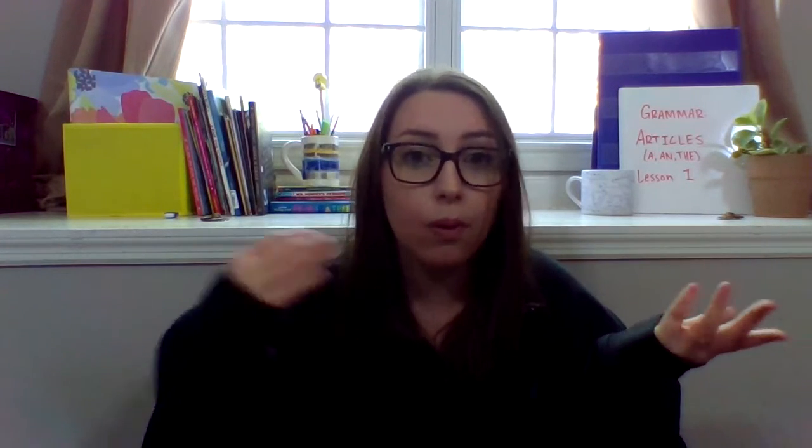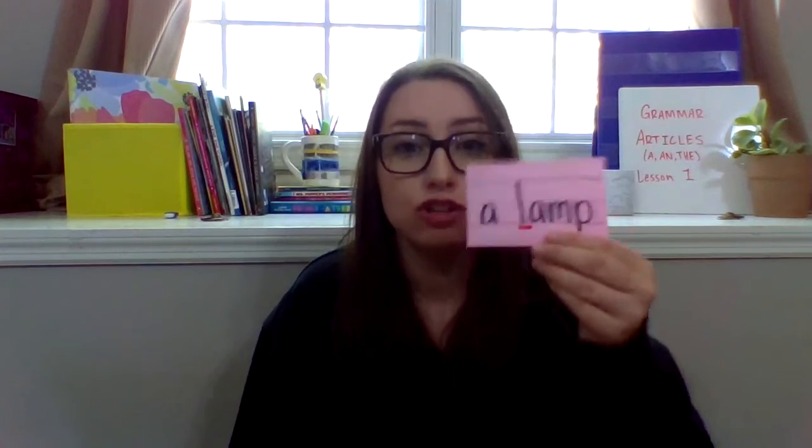Let's think about another one: lamp. Would that be 'a lamp' or 'an lamp'? This one's 'a,' because the first sound is a consonant sound — it's an L sound. The L sound is our first sound, so we know that 'a' has to go with lamp, because we don't have a vowel sound as our first sound.